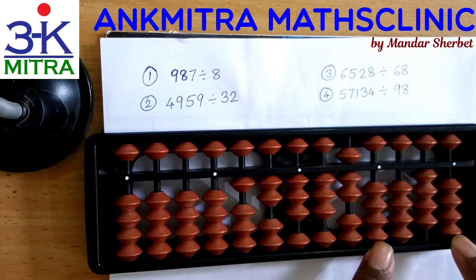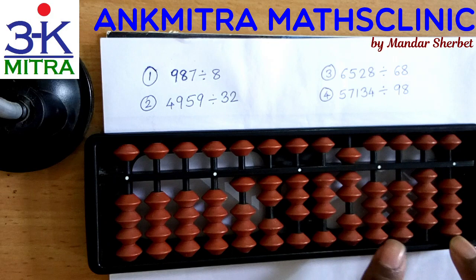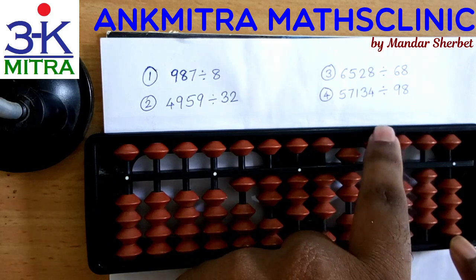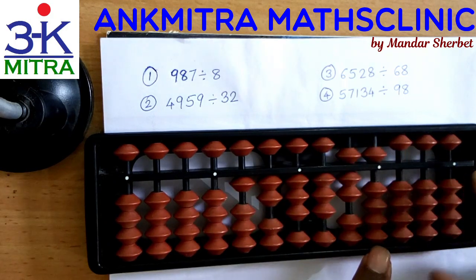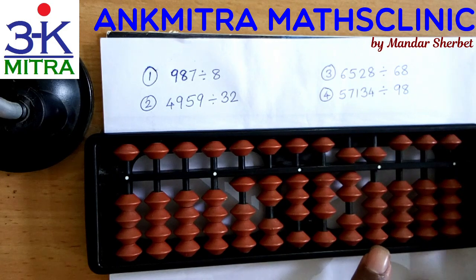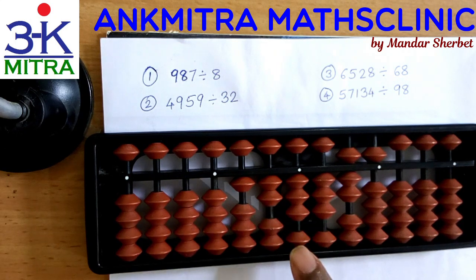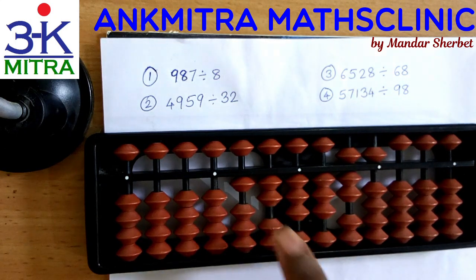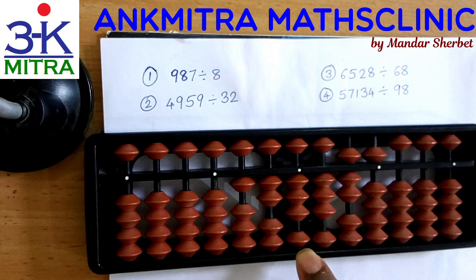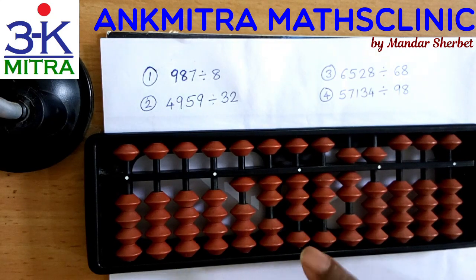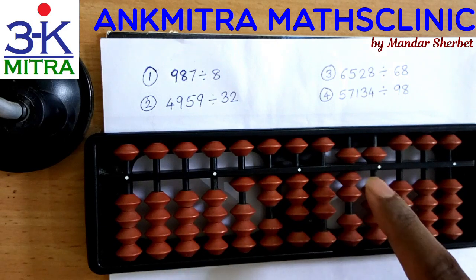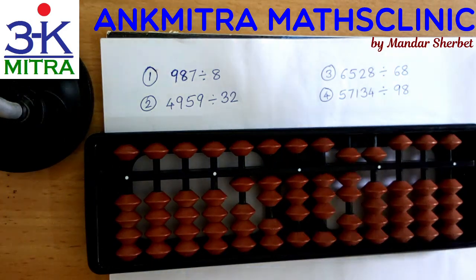Moving one rod further, we have the number 40. As we know, 40 does come in the table of 8 — 5 times 8 is 40. So I'll take 5 on the answer set and subtract 40. The question set is now over. The answer for 987 divided by 8 is 123.375.